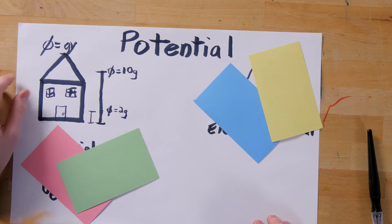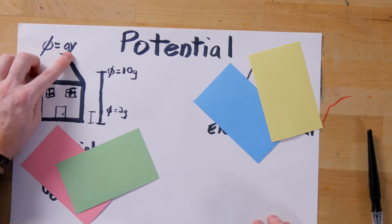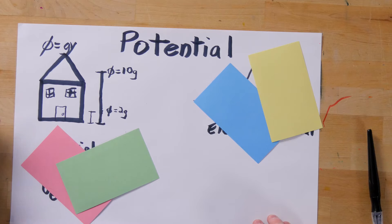For example, gravitational potential is defined by phi equals g y. At all points in space, we can say exactly what the gravitational potential is.